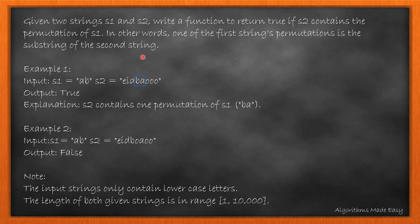For example 1, we can see that AB is a permutation of BA, so the program returns true. While for example 2, there is no permutation of AB in string S2, so the program returns false.